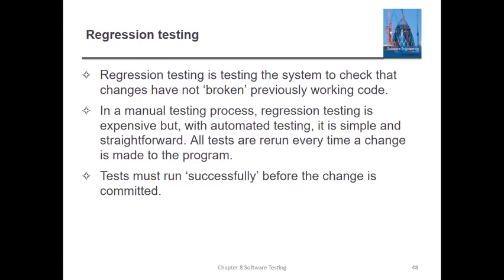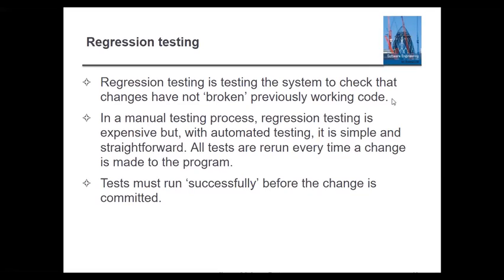Regression testing is a type of testing where you test on a system to check all changes — whether anything has been broken or whether previously working code still works. In manual testing, regression testing is very expensive. To address this, we use automated testing, which is simpler and more straightforward. All test processes can be re-run every time you change the program, keeping test cases successful and allowing you to commit changes.